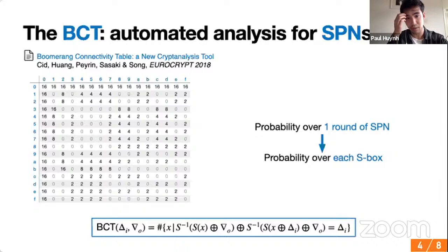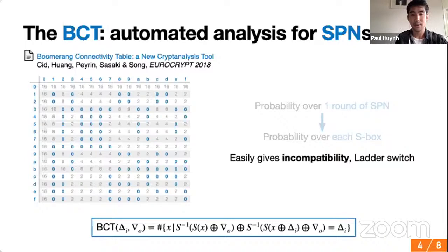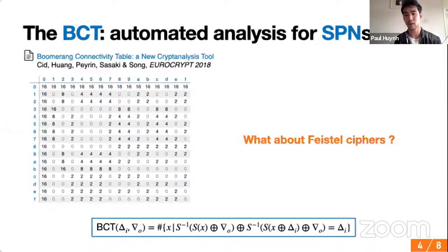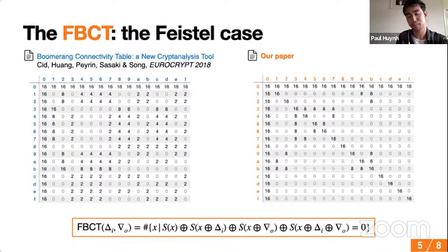The BCT quickly detects special cases: zeros in the table mean the boomerang doesn't come back at all; others detect when it always comes back, like the ladder switch. But the BCT only applies to SPNs. In our paper we introduce the FBCT — the Feistel counterpart of the BCT. The formula is given in the paper. What we can notice is that it's basically the number of times the second-order derivative of S cancels out.